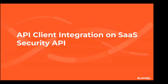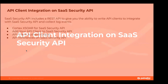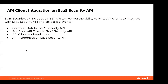API client integration on SaaS Security API: SaaS Security API includes a REST API to give you the ability to write API clients to integrate with SaaS. Please note SaaS Security is hosted in the United States, EMEA, and APAC. In this topic we will further discuss Cortex XSOAR for SaaS Security API, adding your API client to SaaS Security API, API client authentication, and API references on SaaS Security API.